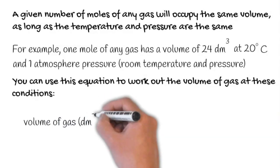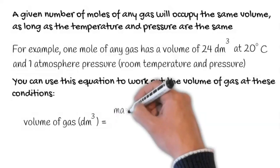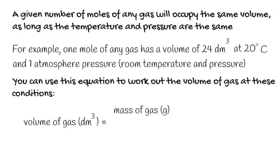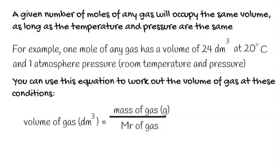You can use this equation to work out the volume of gas at these conditions. The volume of gases in dm cubed is equal to the mass of gas in grams divided by the Mr of the gas times 24.